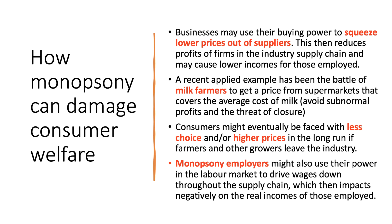A really good example has been the continuous battle between supermarkets and farmers and other growers to get a decent price for the milk they are producing. There was a time a few years ago when farmers were literally throwing milk away because the price they were getting couldn't cover the cost of production — they were making sub-normal profits and many were leaving the industry. If farmers don't get a decent price, they may leave the sector, and consumers could then face less choice and perhaps higher prices.